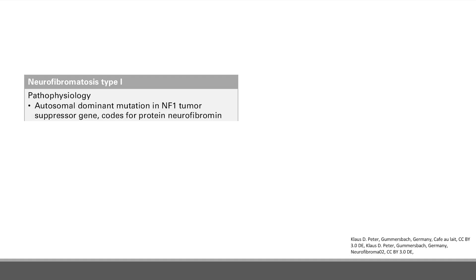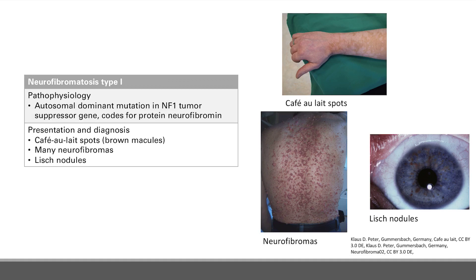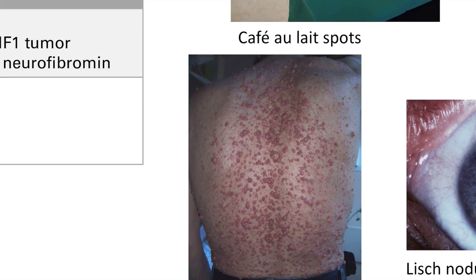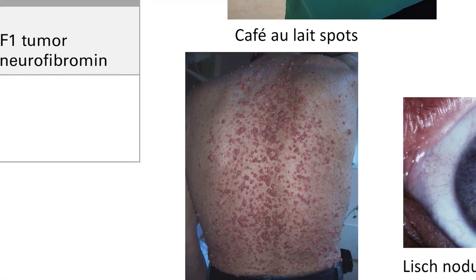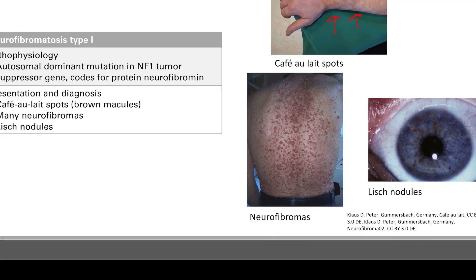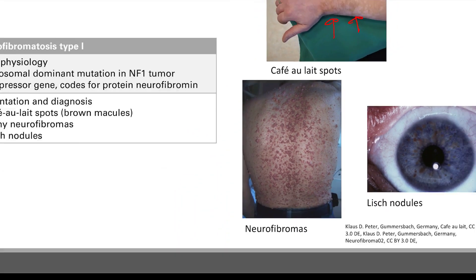With NF1, you're going to get café au lait spots — café means brown, so you have these brown macules on your skin. You also have many neurofibromas, which are little pop-up tumors on your skin. These neurofibromas are very characteristic of NF1.